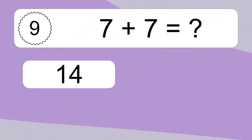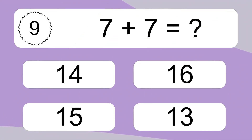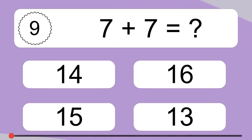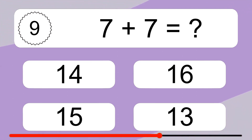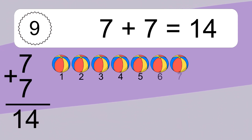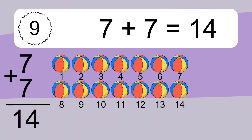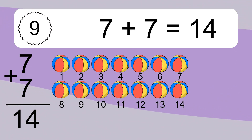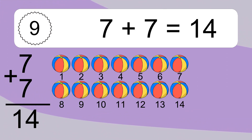7 plus 7 equals what? 7 plus 7 equals 14. Let's count it: 1, 2, 3, 4, 5, 6, 7, 8, 9, 10, 11, 12, 13, 14.